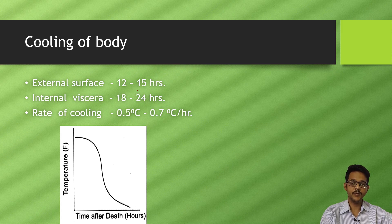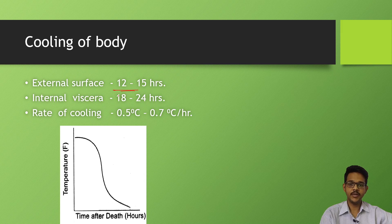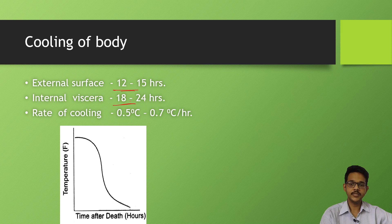Cooling of the body, also known as algor mortis: if the external surface is similar to that of environment, which occurs mainly up to 12 to 15 hours. Internal cooling, which can be assessed by rectal thermometer, reaches ambient temperature in 18 to 24 hours.